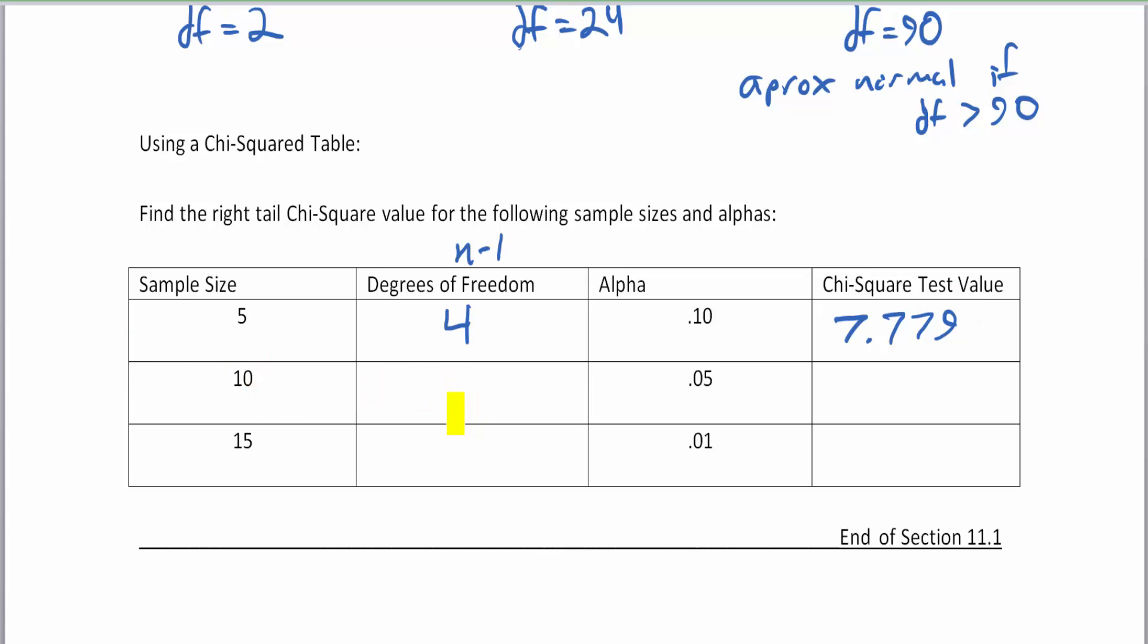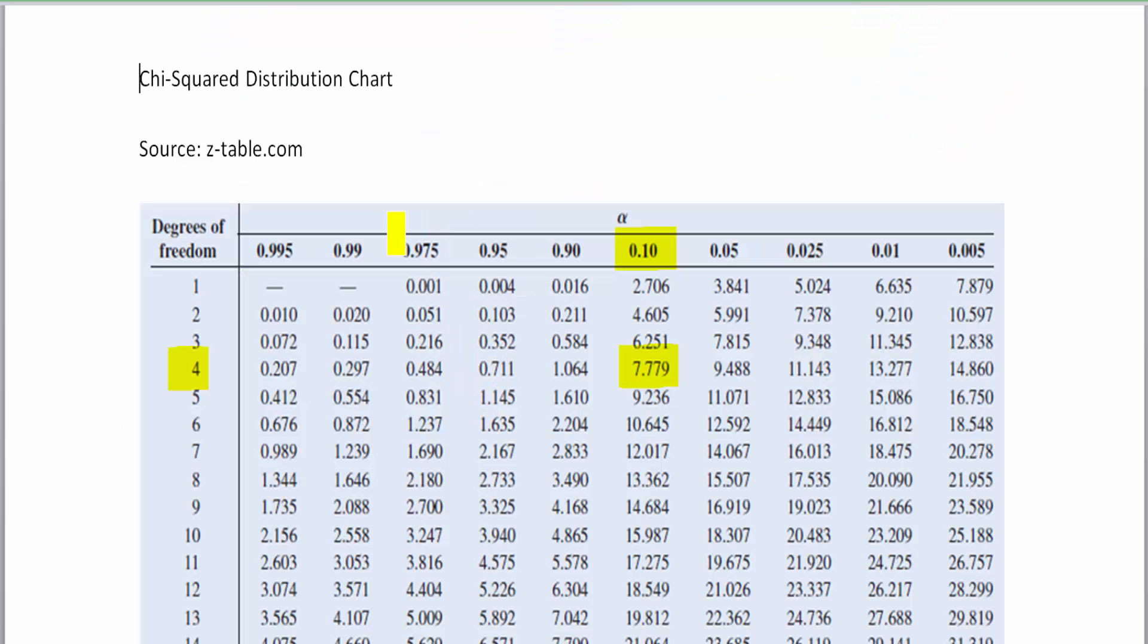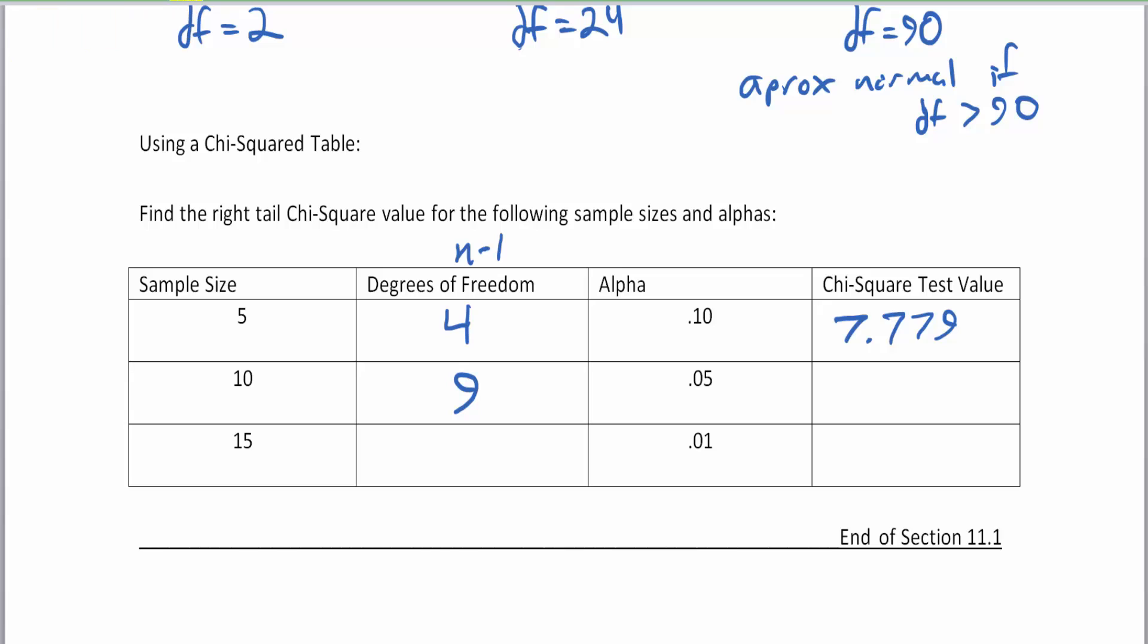So if a sample size is 10, this is nine degrees of freedom. Let's look at our chart at alpha of 0.05. So nine degrees of freedom, 0.05. Our chi-squared value is 16.919, and the calculator will turn that into a p-value to see if this was a rare event or not.